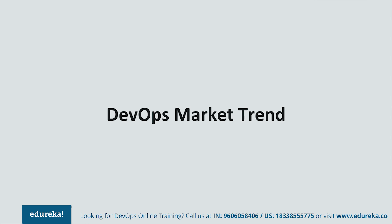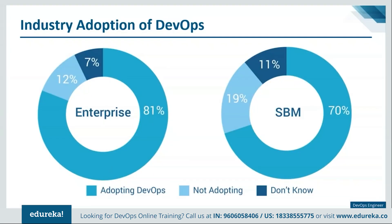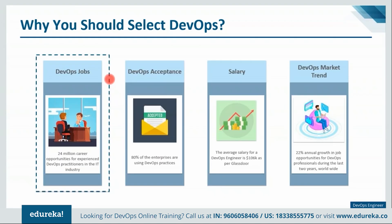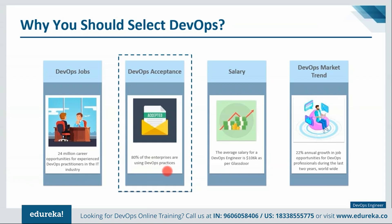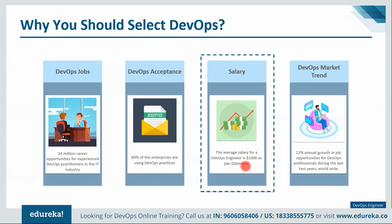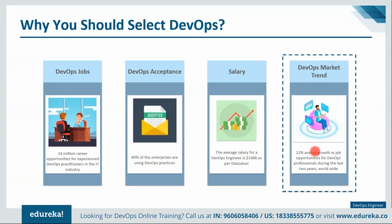Let's look at the DevOps market trend. 81% of enterprises are using DevOps practices, and around 70% of small to medium businesses are as well. There are 24 million career opportunities for experienced DevOps practitioners in the IT industry. The average salary for a DevOps engineer is $106,000 as per Glassdoor, and there has been 22% annual growth in job opportunities for DevOps professionals over the last two years worldwide.